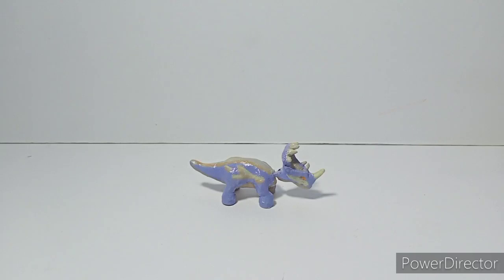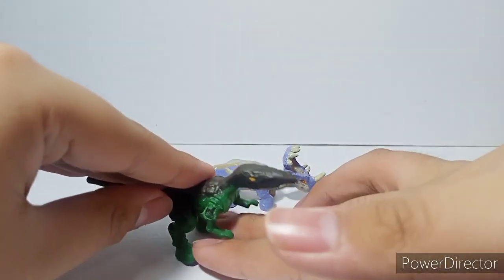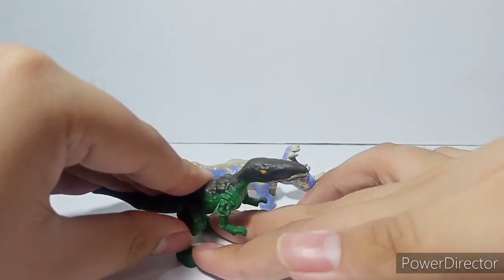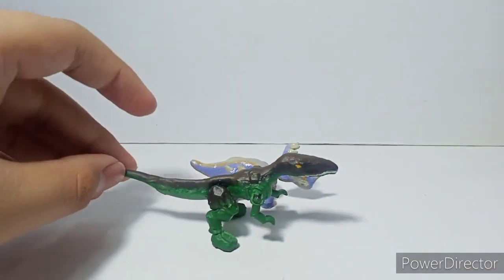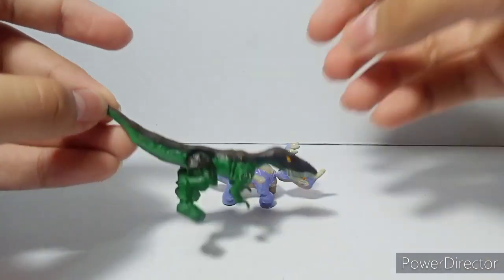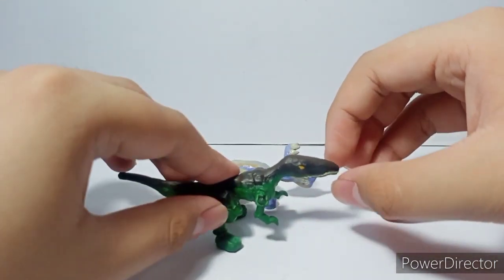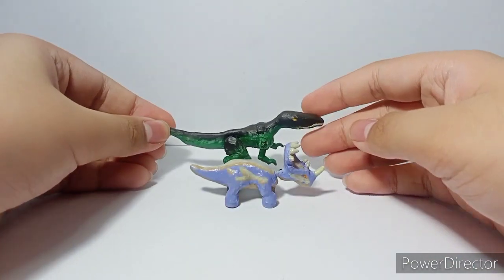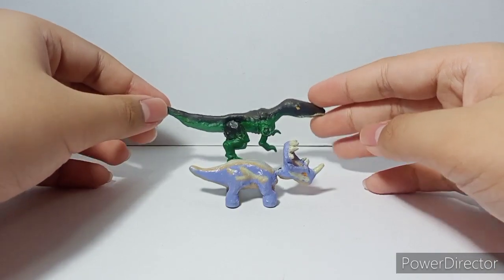The Baryonyx doesn't stand, I'm not sure why, but hopefully I can get it to stand. But yeah, so I'm just going to do like this. The Sinoceratops is shorter and also really small compared to the Baryonyx because the Baryonyx is taller and also longer.